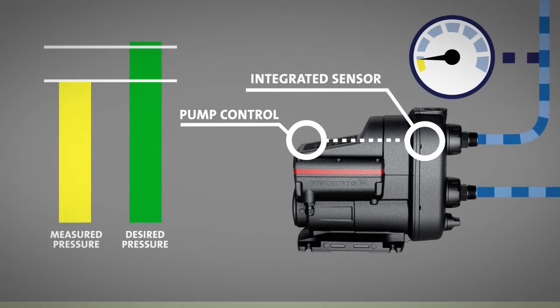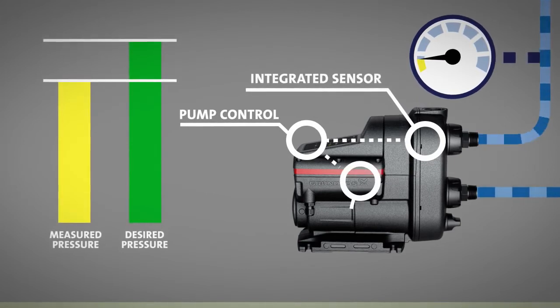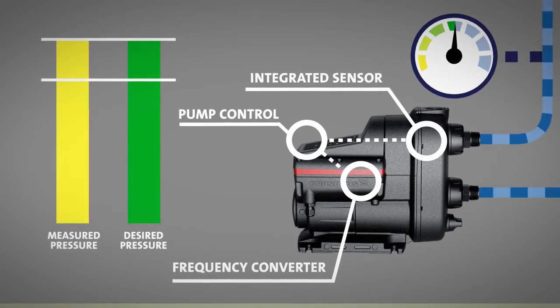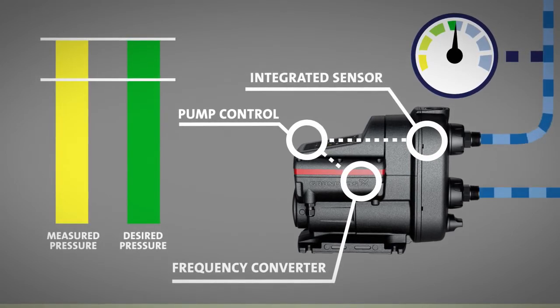If there is a difference between these two measurements, the pump control signals the frequency converter to increase or decrease pump speed and thus the water pressure in the system.